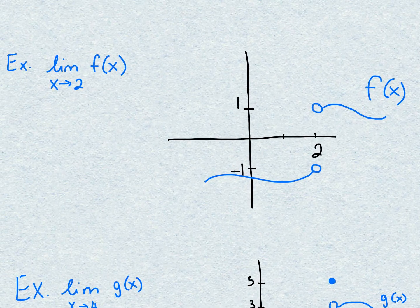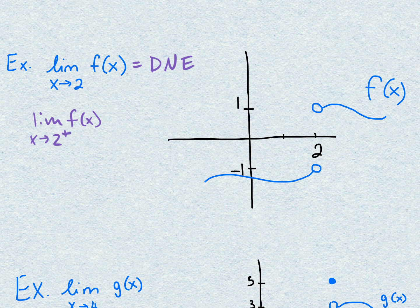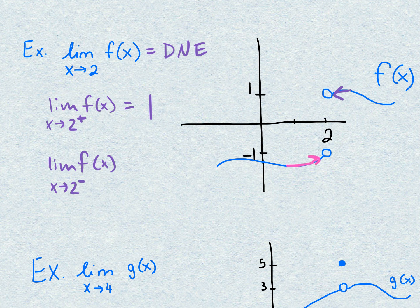The next page gives us graphs — we find limits from the graph. The limit of f(x) as x approaches 2: are we approaching the same number? No, so the limit does not exist. But we can say: the limit of f(x) as x approaches 2 from the positive direction (right side) would be 1. The limit of f(x) as x approaches 2 from the negative direction (left side) would be negative 1.